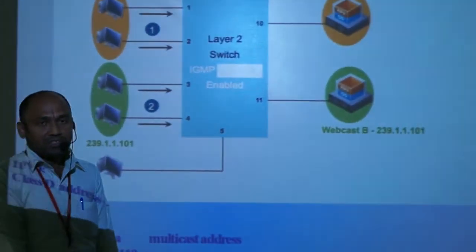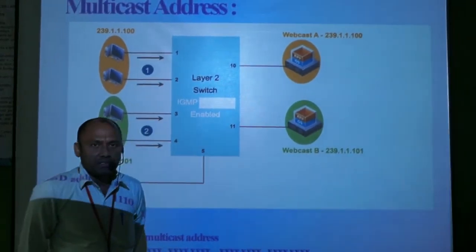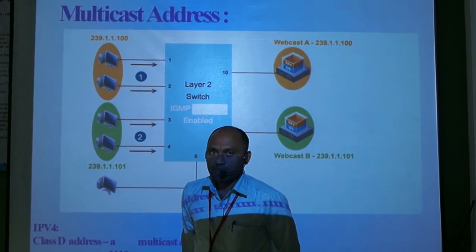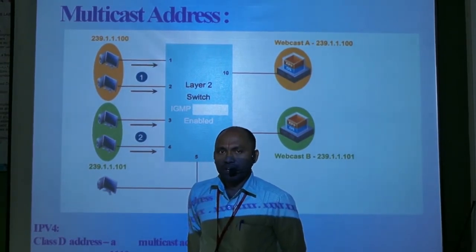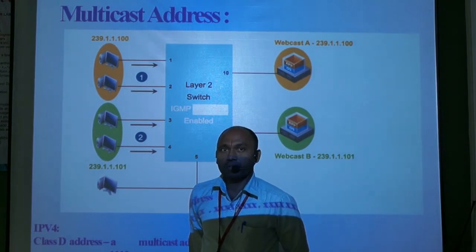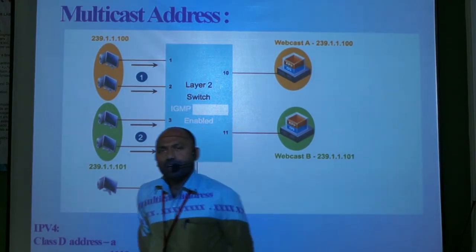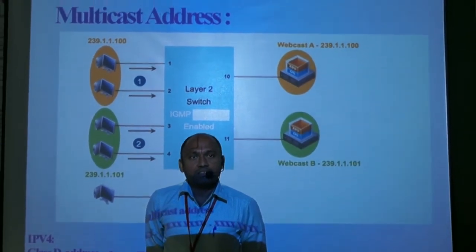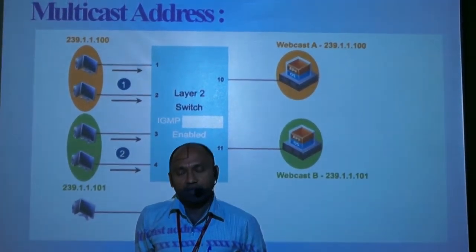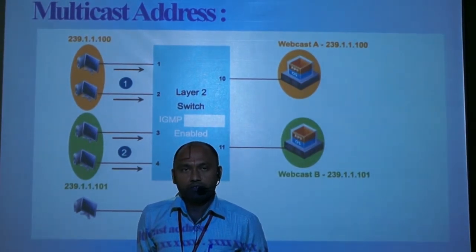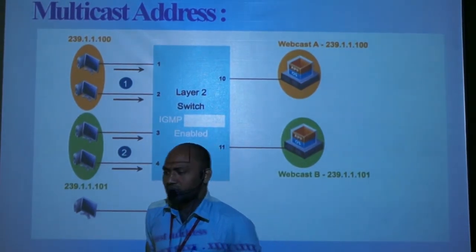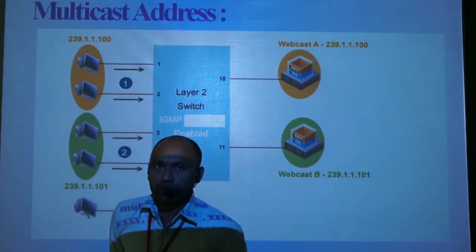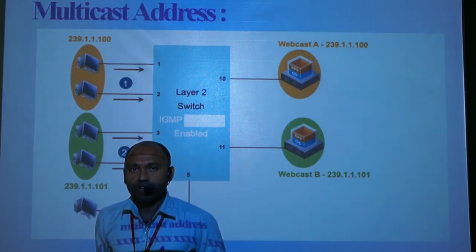The next question is: how can we differentiate multicast packets from unicast packets? We differentiate packets with respect to addressing, since an address gives the identity of the device or packet. In IPv4, among various classes of addresses, Class D address is specified specially to represent multicasting. The length of the address is always 32 bits, represented either in decimal notation or in binary.